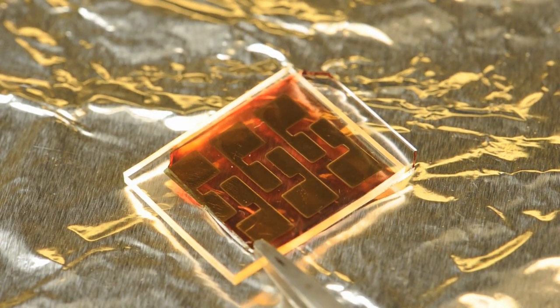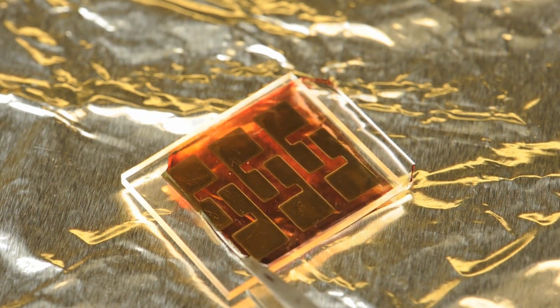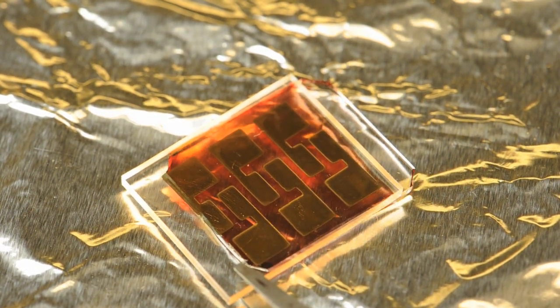Alternatively, we can evaporate gold electrodes on a clear silicone rubber stamp and laminate the rubber stamp onto the polymer film to make our devices.